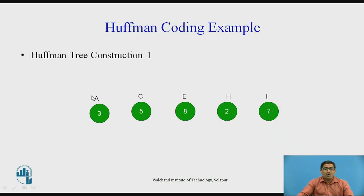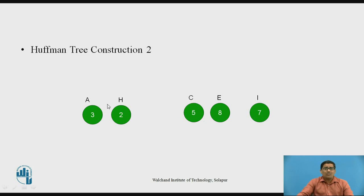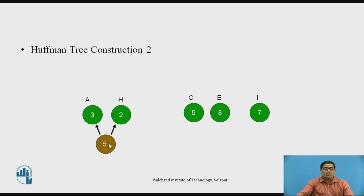First we want to combine the two symbols with the lowest frequency. Since A has frequency 3 and H has frequency 2, these two frequencies are very low compared to the other symbols. Therefore, we take A and H first. After combining A and H, the frequency of A is 3 and the frequency of H is 2, so the combined frequency becomes 3 plus 2, which is 5.